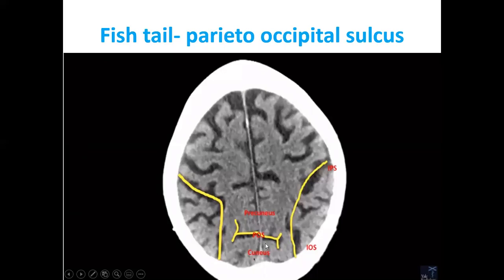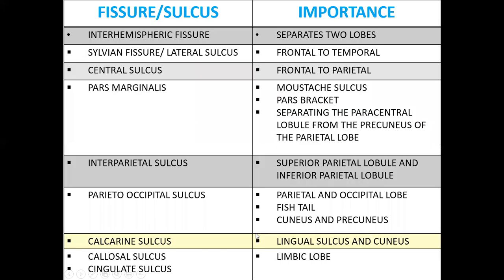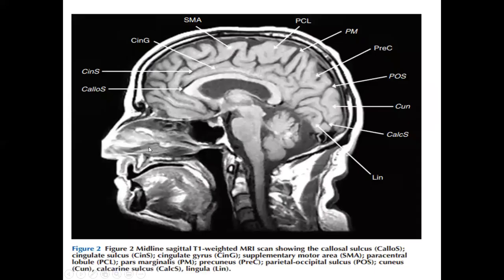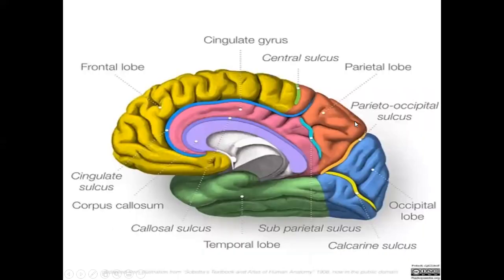The calcarine sulcus separates the cuneus from the lingual gyrus. This is the lingual gyrus and this is the cuneus. The calcarine sulcus thus runs between the cuneus superiorly and the lingual gyrus inferiorly.